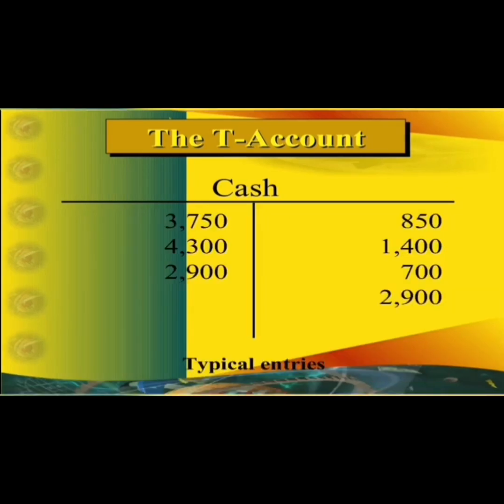Here are a few transactions entered in the cash account. On the left side we have figures such as 3,750, 4,300, and 2,900, and on the right side we have 850 and so on. These are typical entries we record in the cash account.